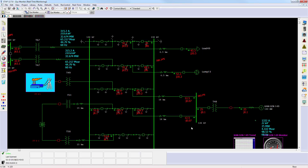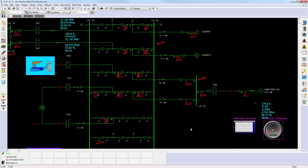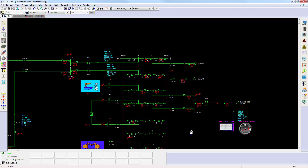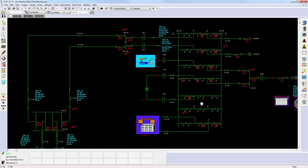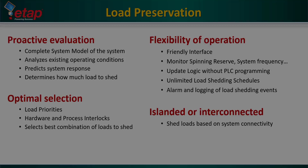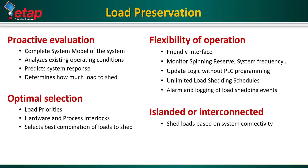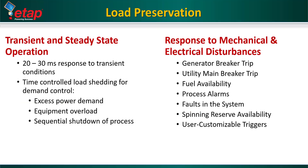ETAP ILS looks at the entire network — not only at a single parameter or component — to make decisions, which is why it can perform optimization of the entire network. ETAP provides a clear picture of the system distribution and data required to understand system response, enabling operators and engineers to visualize the entire network. ILS monitors existing operating conditions and uses this information to determine system response, allowing for much smarter and faster intelligent load shedding, determining how much load to shed for a given transient or steady-state disturbance.